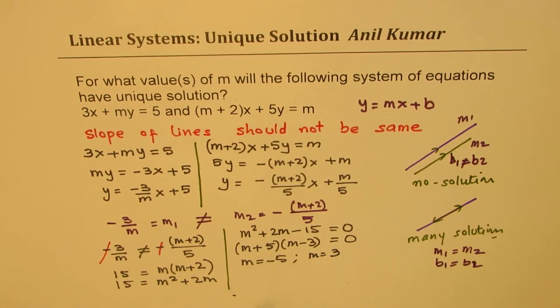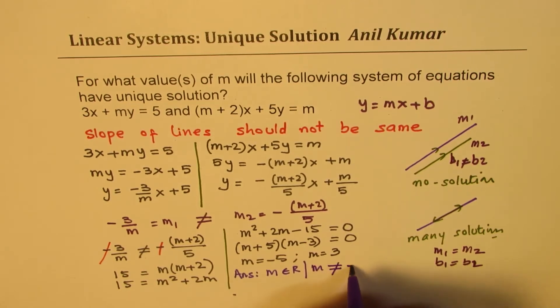So except for these two values, where the slope becomes same, we have all other numbers. So our answer in this particular case is that m belongs to real numbers where m is not equal to minus 5 and 3.